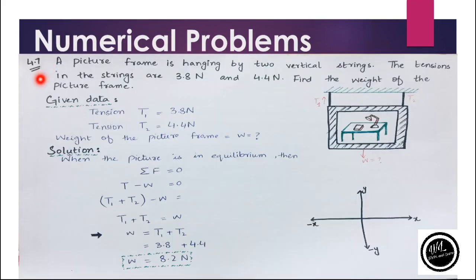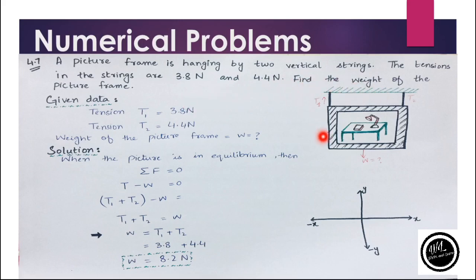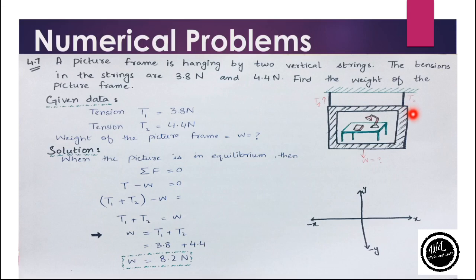Next is numerical 4.7. The statement is: a picture frame is hanging by two vertical strings. The tension in the two strings are 3.8 Newton and 4.4 Newton. Find the weight of the picture frame. There is a picture frame hanged by two strings, with tension T1 in the first string and tension T2 in the second string.